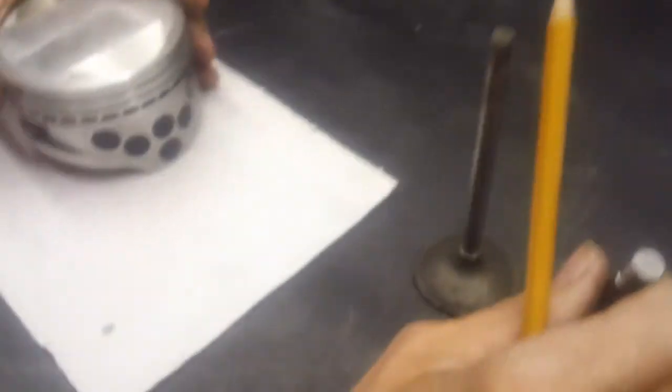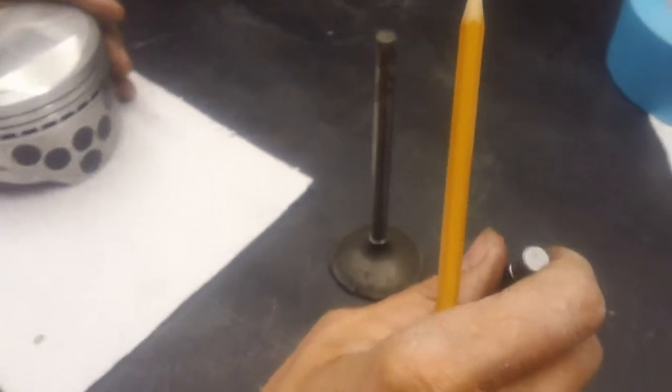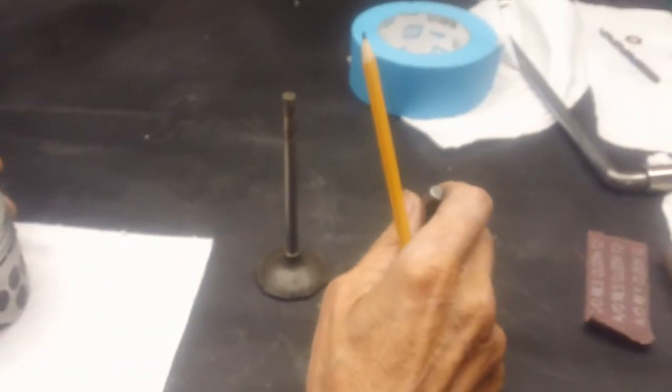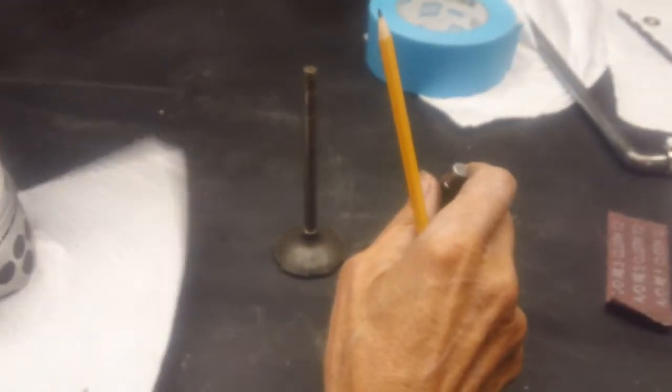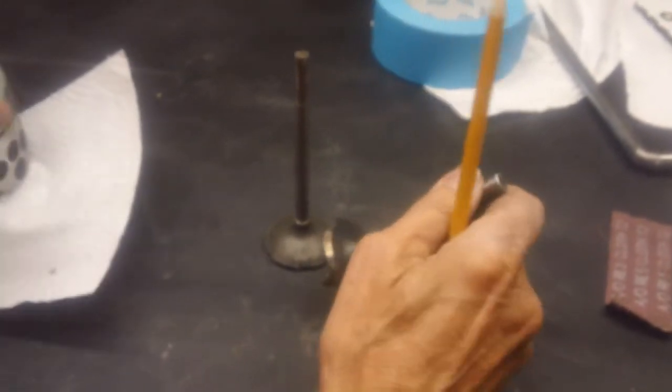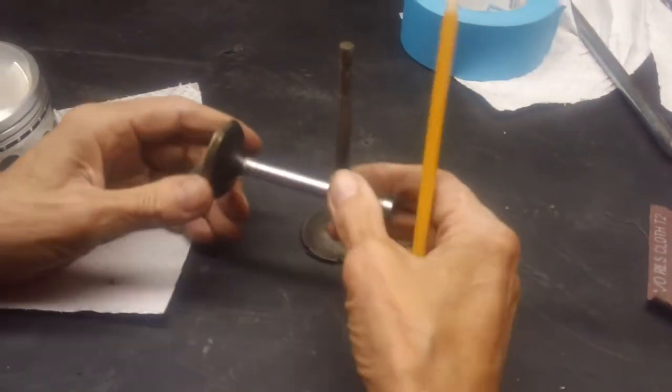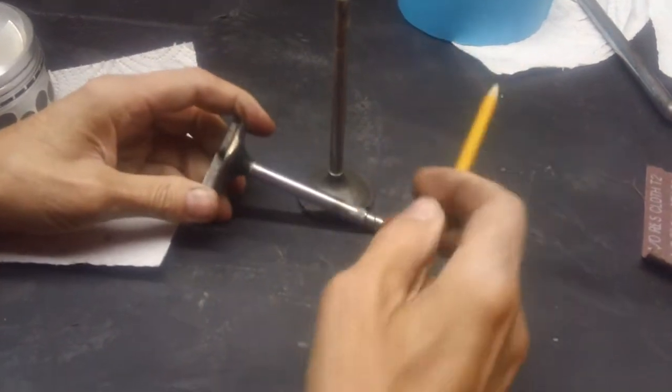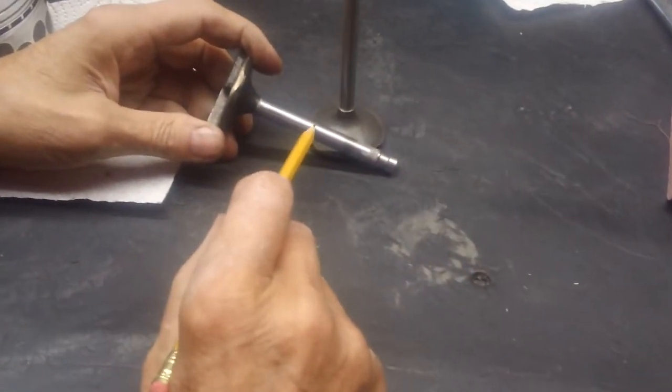You can go to your local automobile repair center and ask them for an old worn-out valve. Obviously, you get one with the correct stem diameter.